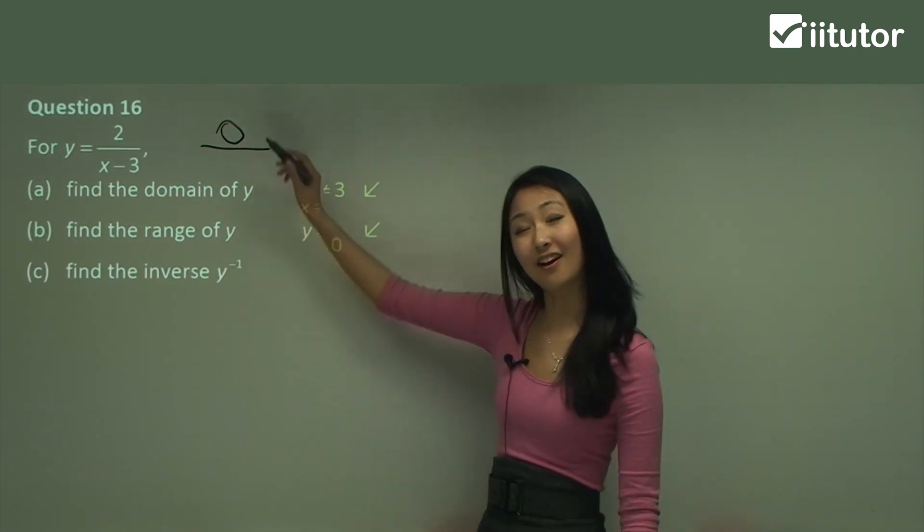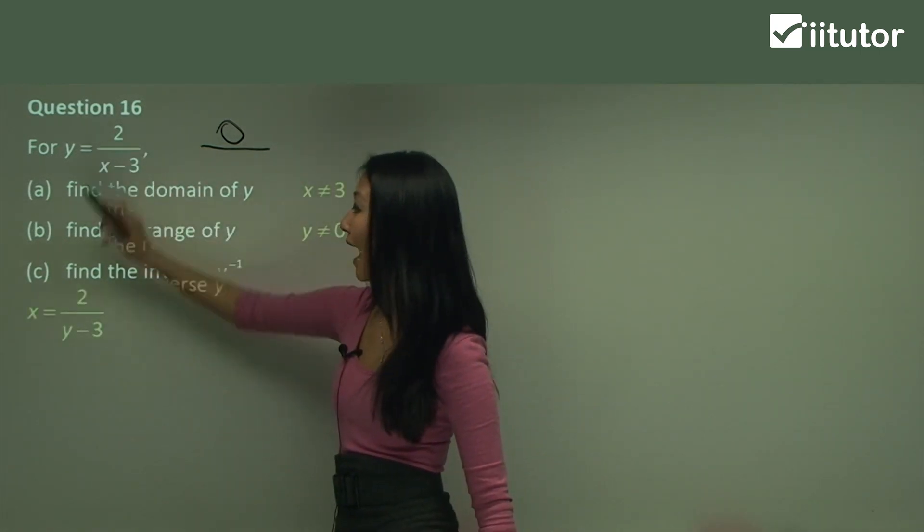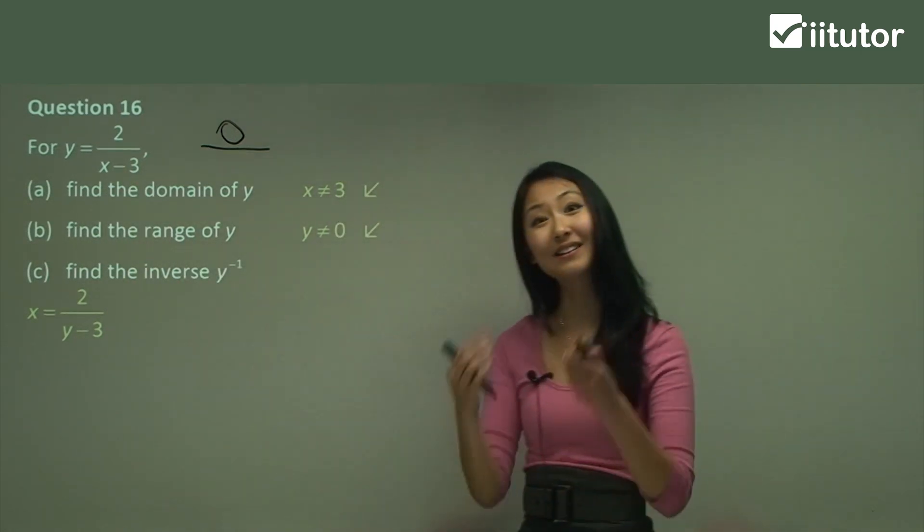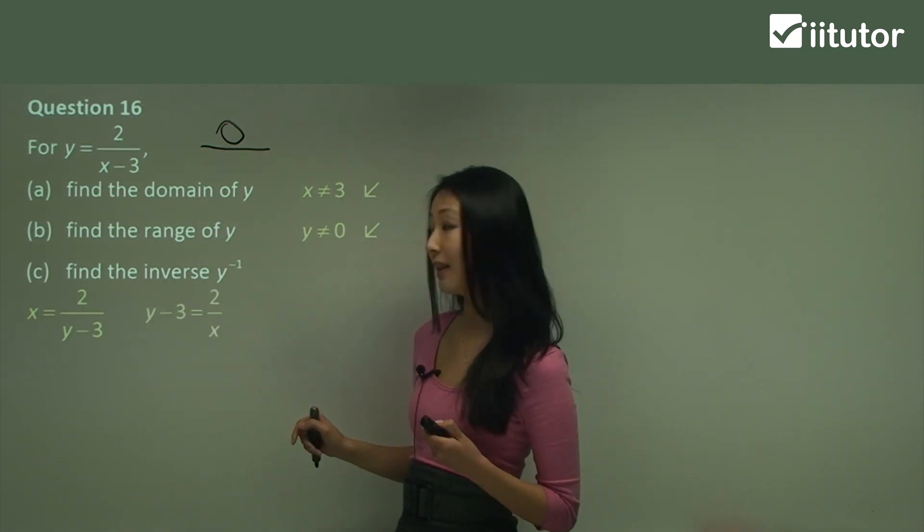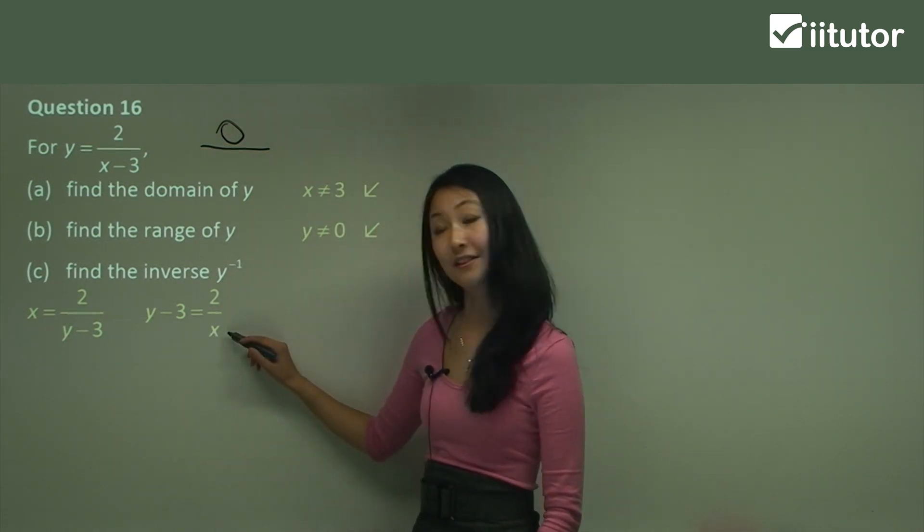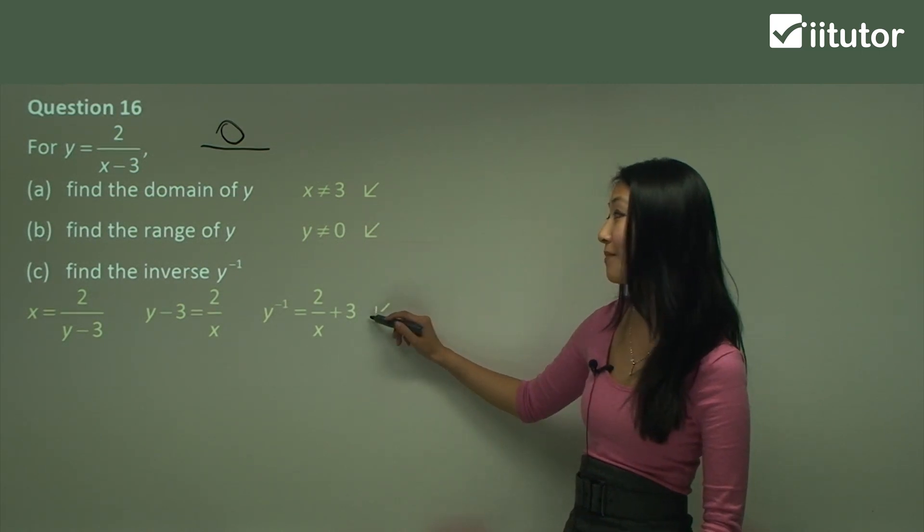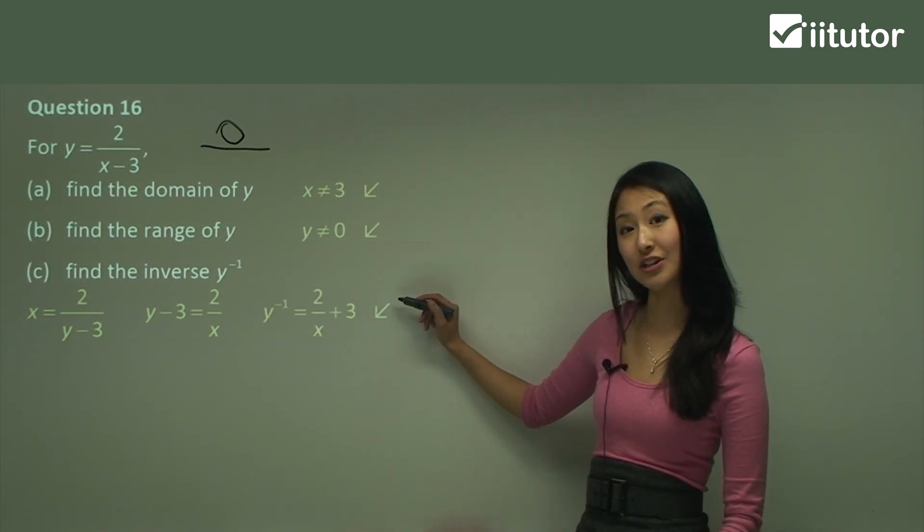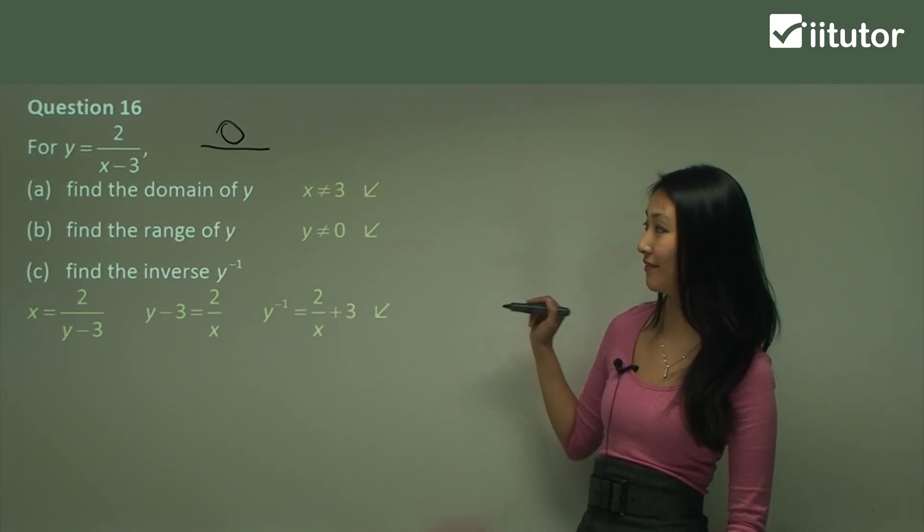So now let's find the inverse of this function. So first thing we want to do, change the y to x, and change the x to y. And now we want to make, that's right, y the subject. So we just cross multiply. So this comes up here, and that x comes down here to be the denominator. Can you see that? And now we just move the 3 to the other side, and it becomes plus 3. And change this to the notation, the inverse notation. So we have the inverse of the function.